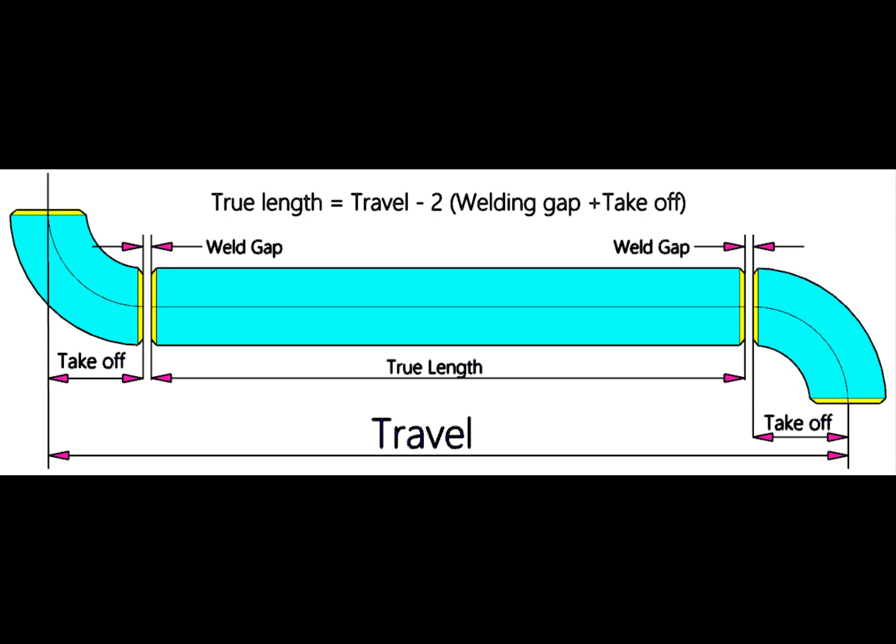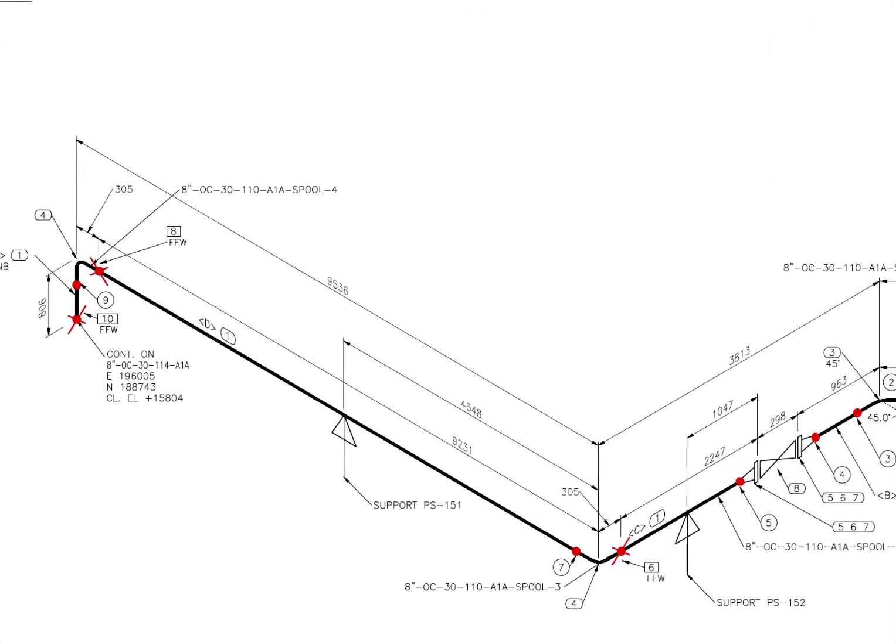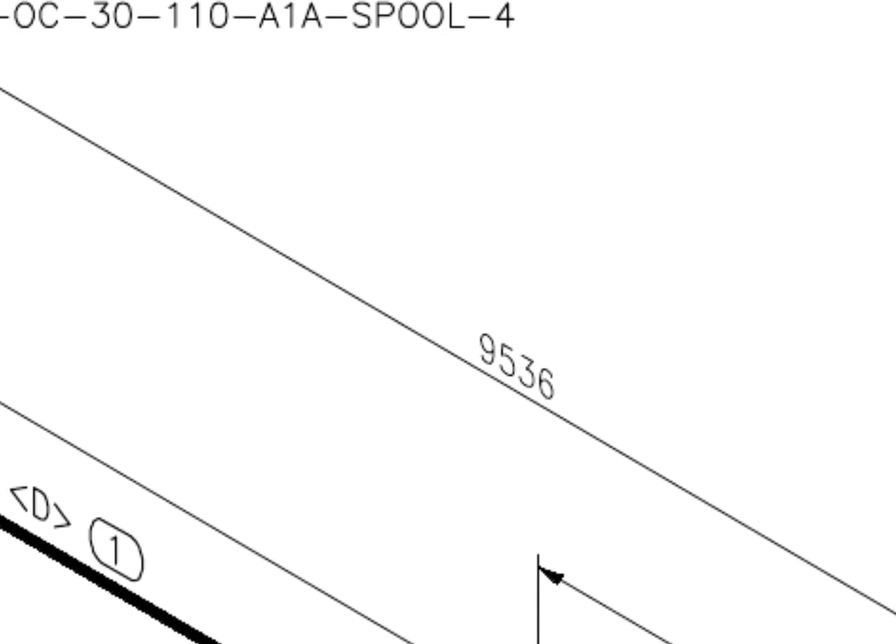Let us go to some examples. Here the travel length is 9536. Let us check the diameter of the pipe.